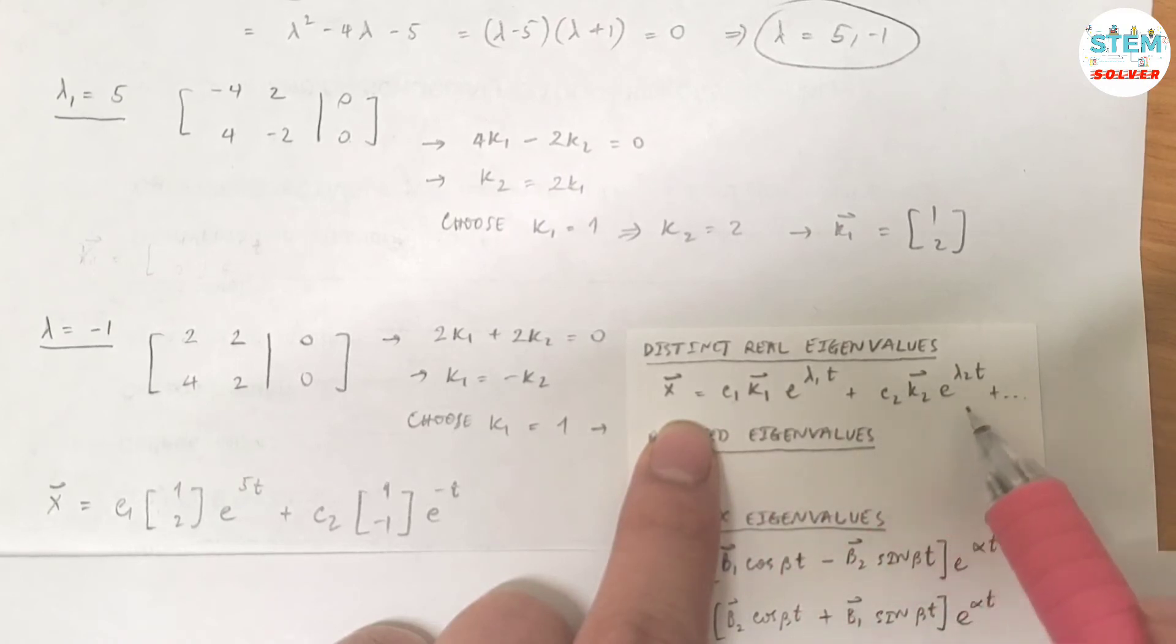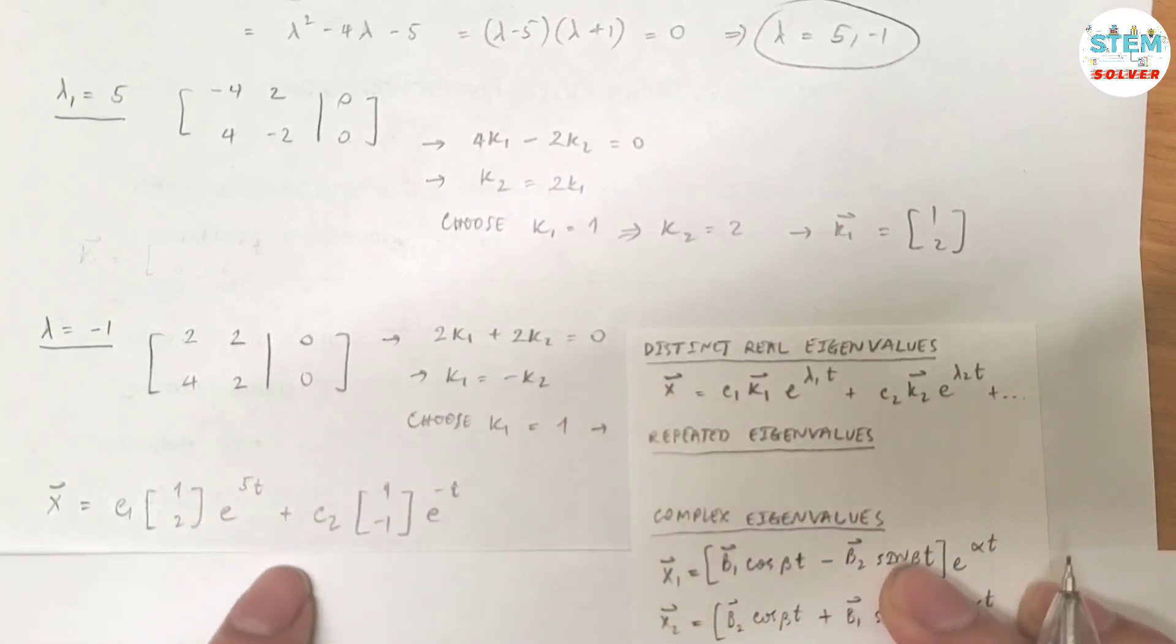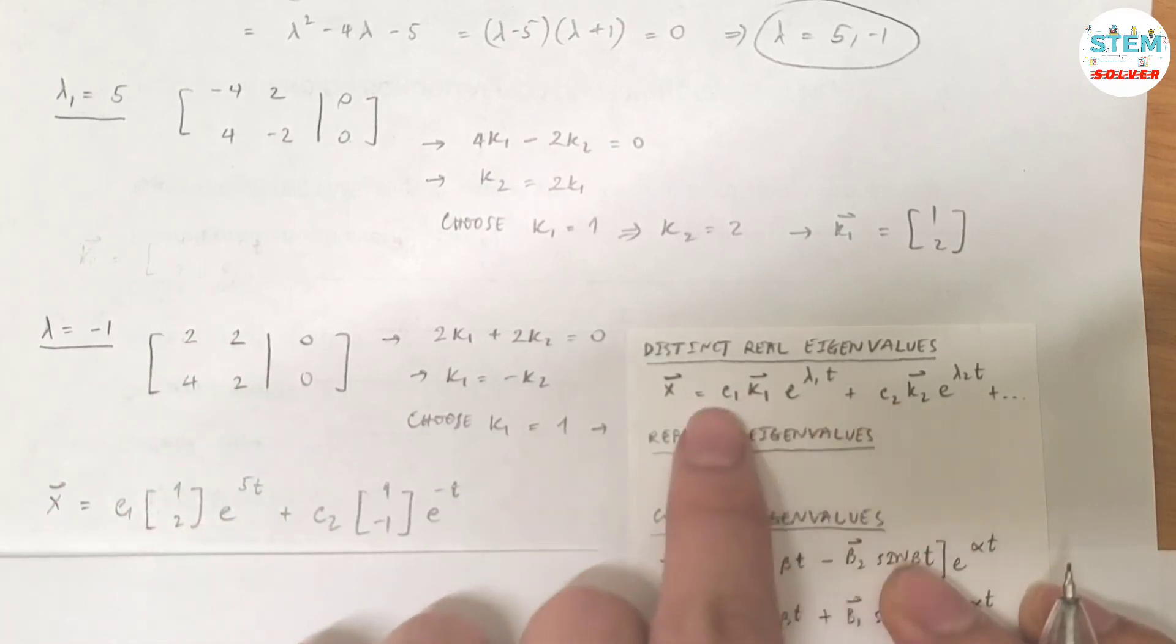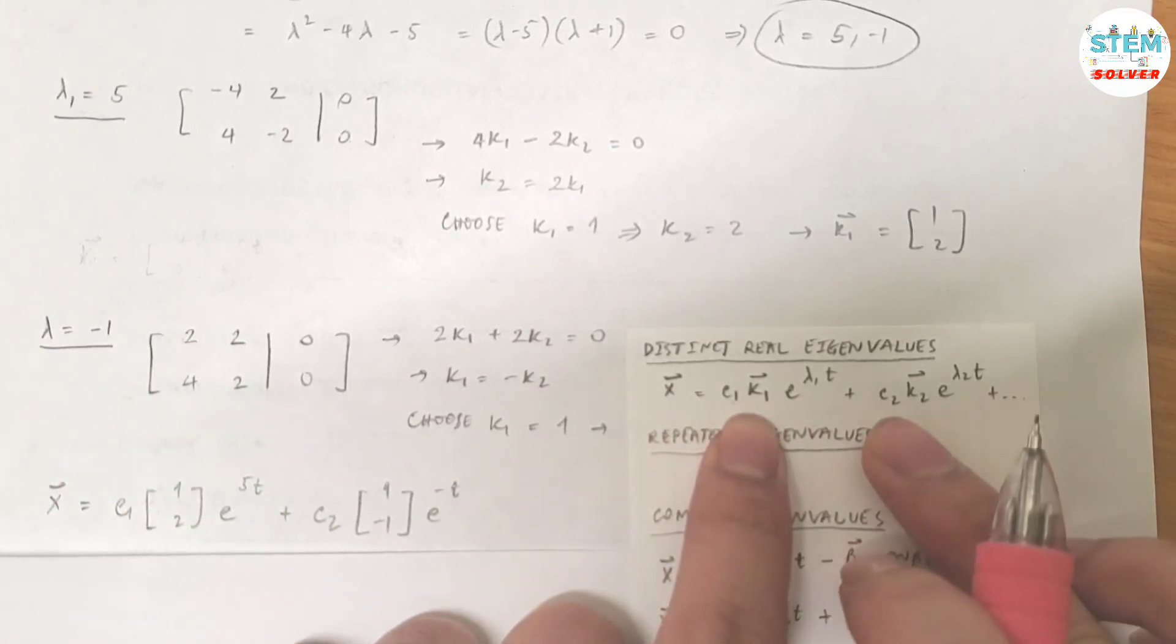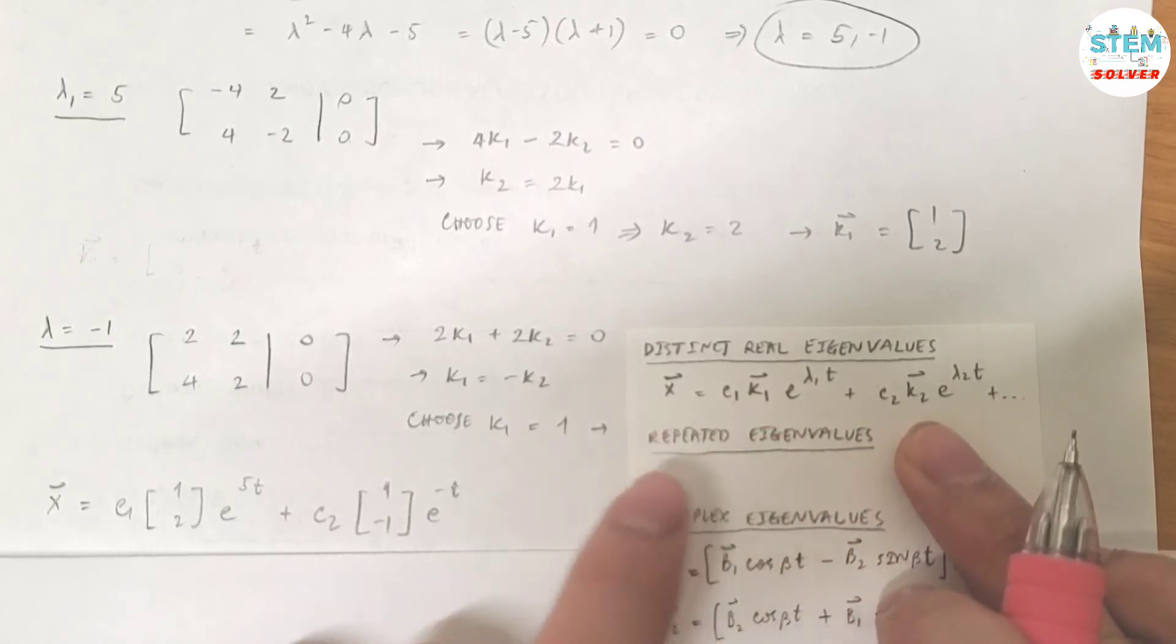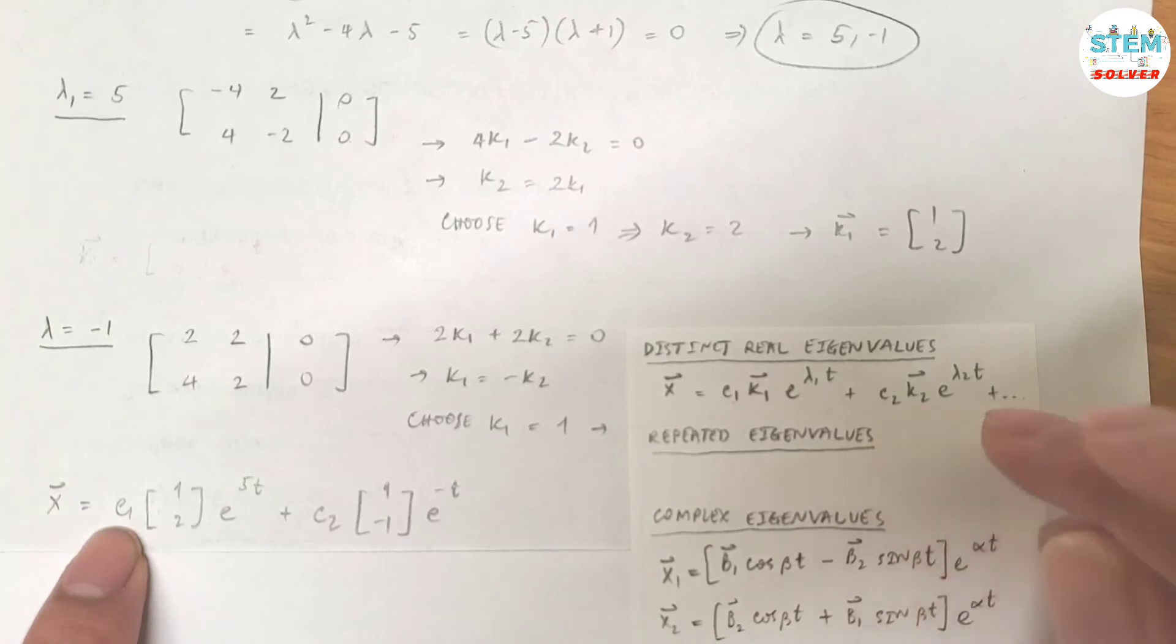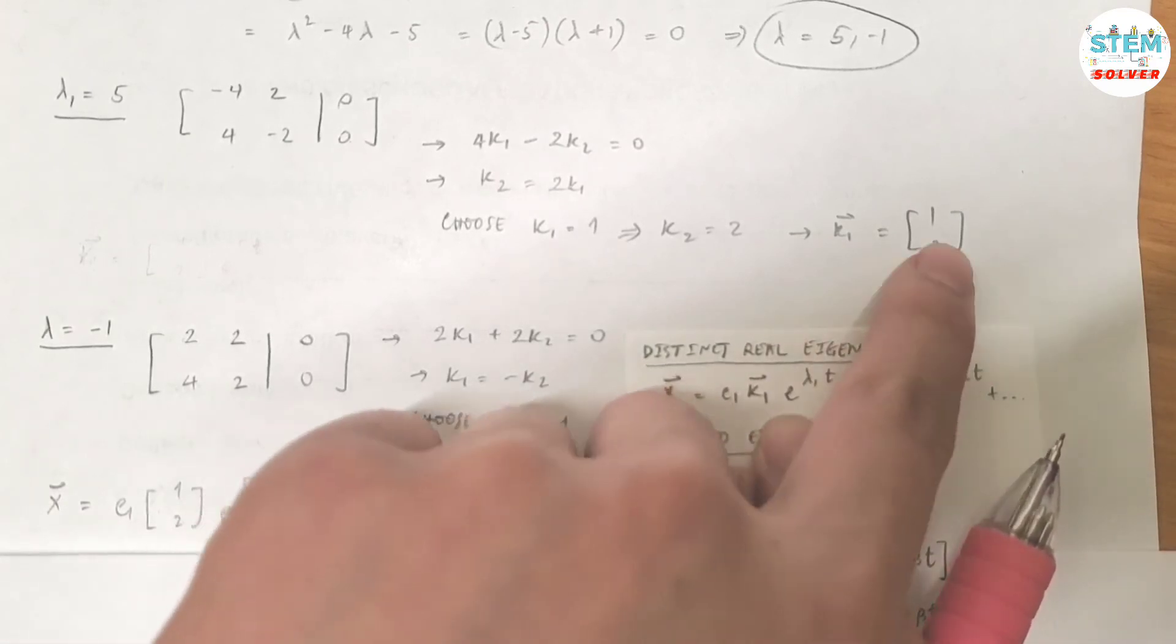So if you have 3 lambdas, you're going to have C3 all the way down to the end. In this case, you have 2 values for lambda, so we have 2 solutions—I mean 2 subsolutions. My final solution is equal to C1 times vector k1, which is this one...